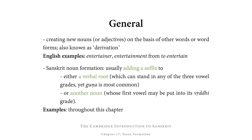Examples of words formed by derivation in English would be words such as entertainer and entertainment, formed on the basis of to entertain. Sanskrit noun formation of this kind usually works by adding a suffix to either a verbal root — which can stand in any of the three vowel grades, though guṇa is the most common — or by adding a suffix to another noun, whose first vowel may be put into its vṛddhi grade.